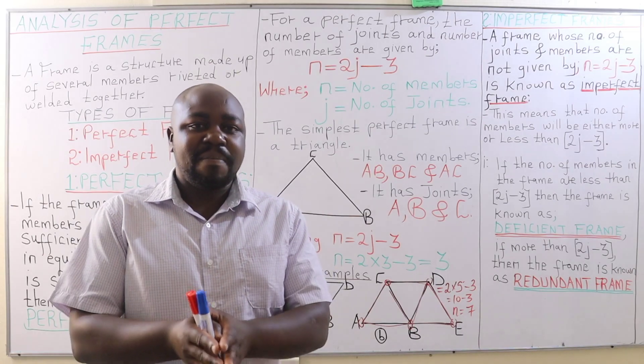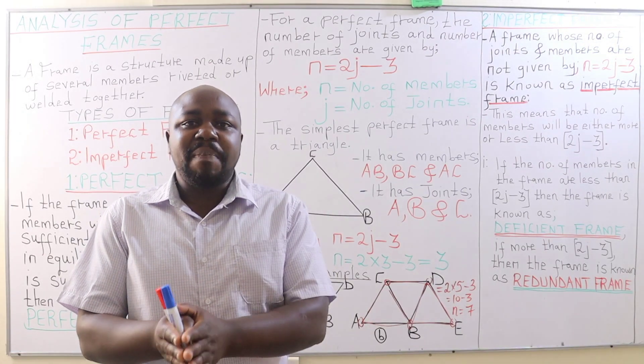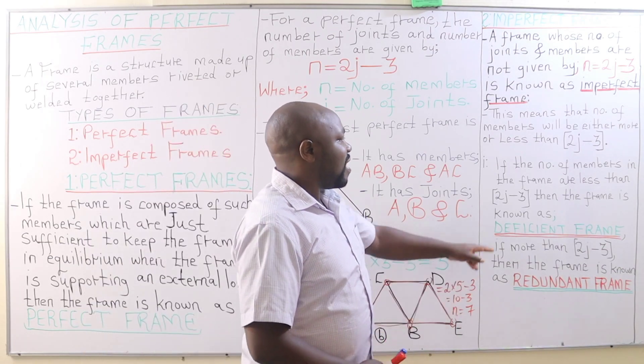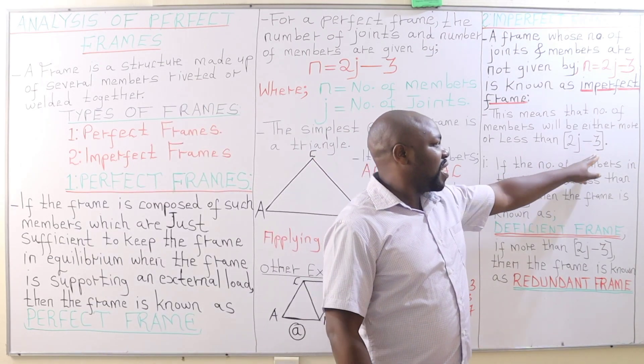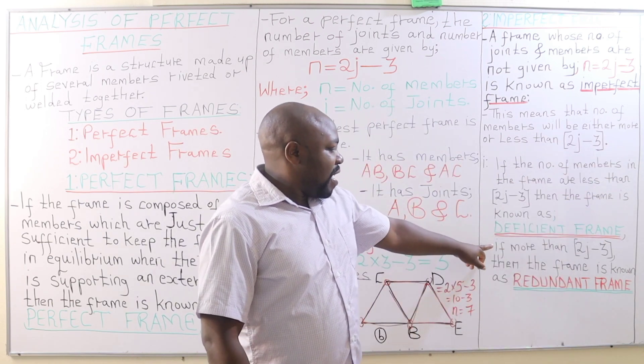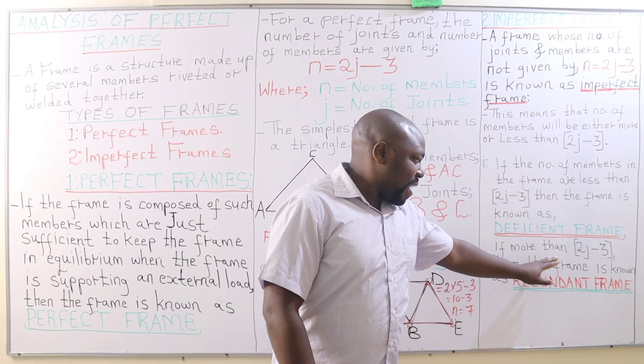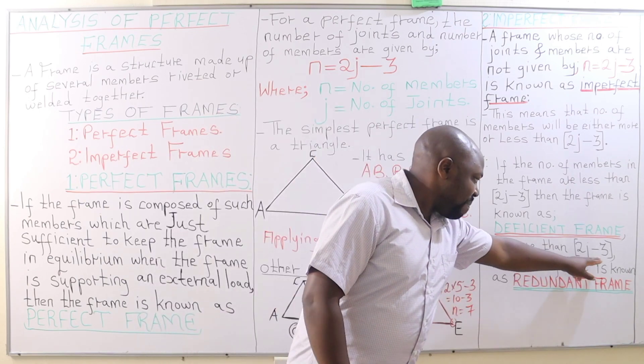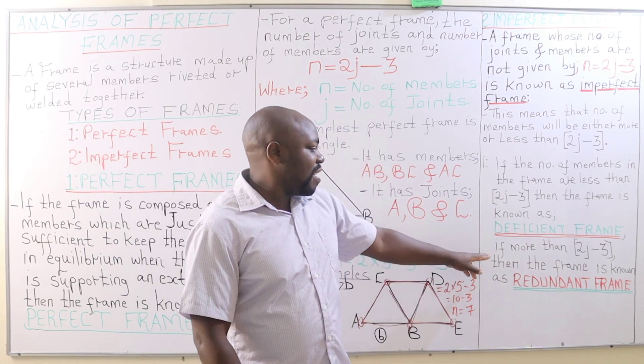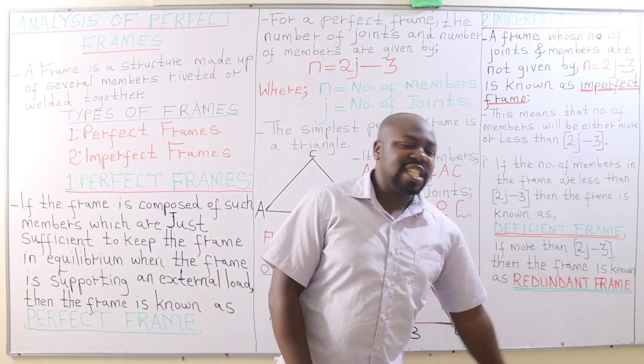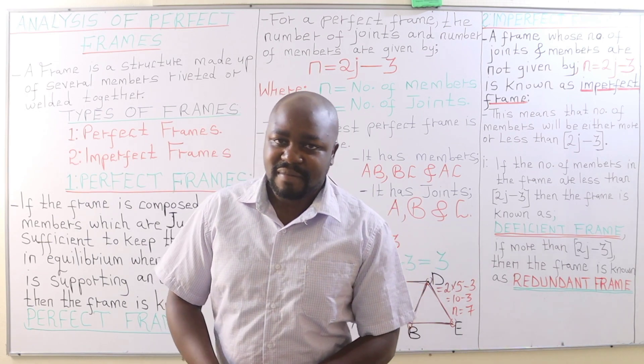Likewise, if the number of members are more than 2j minus 3, then the frame is known as a redundant frame.